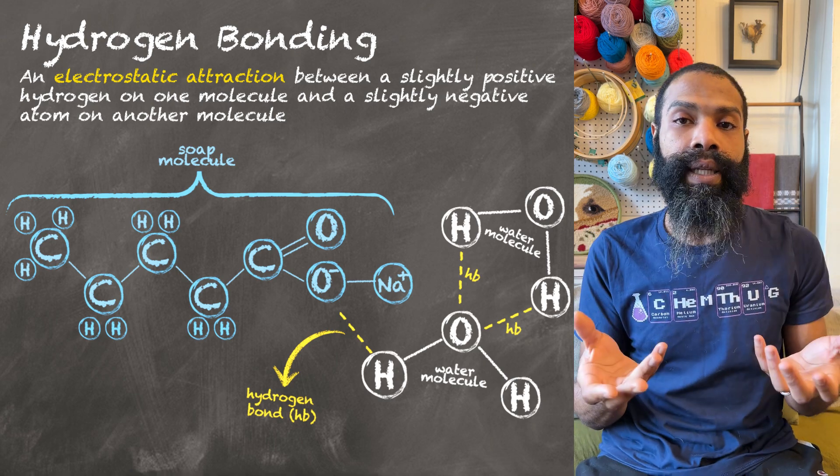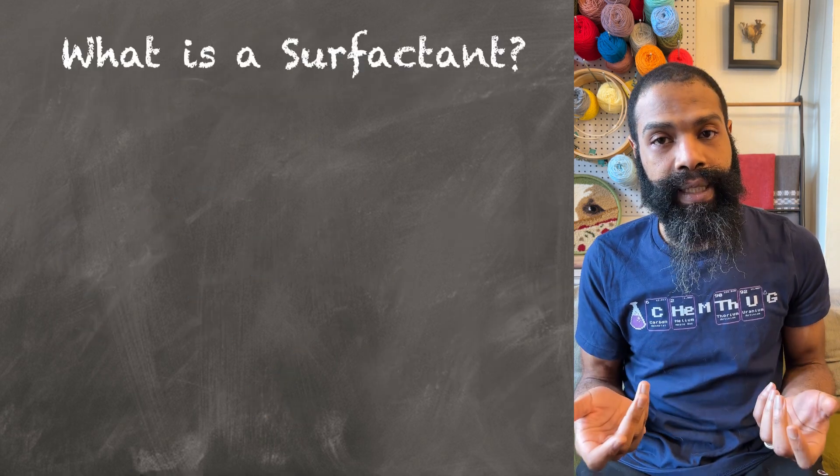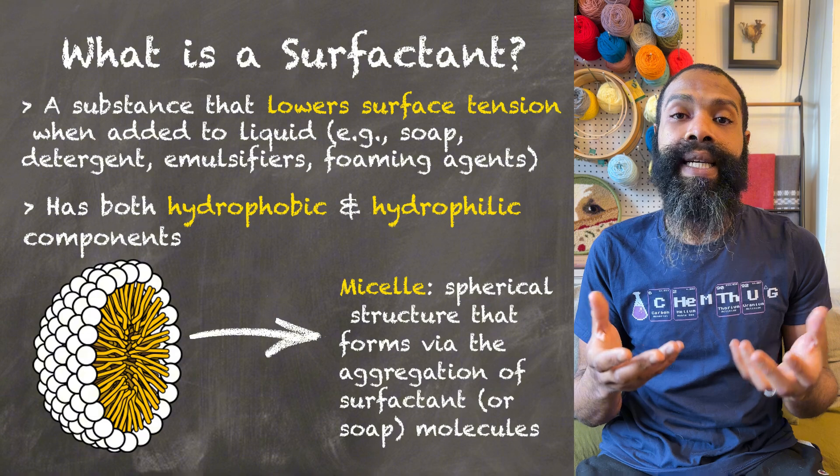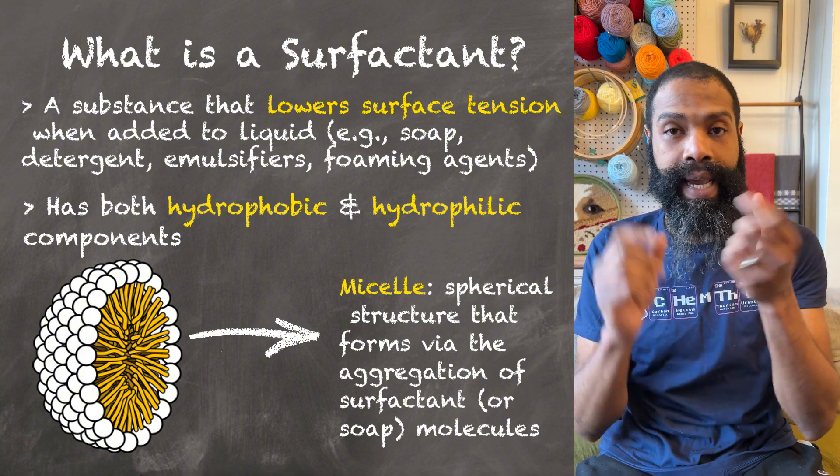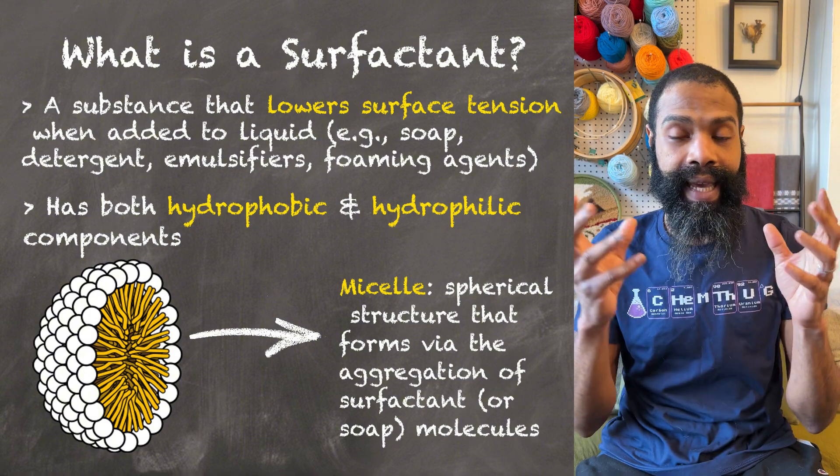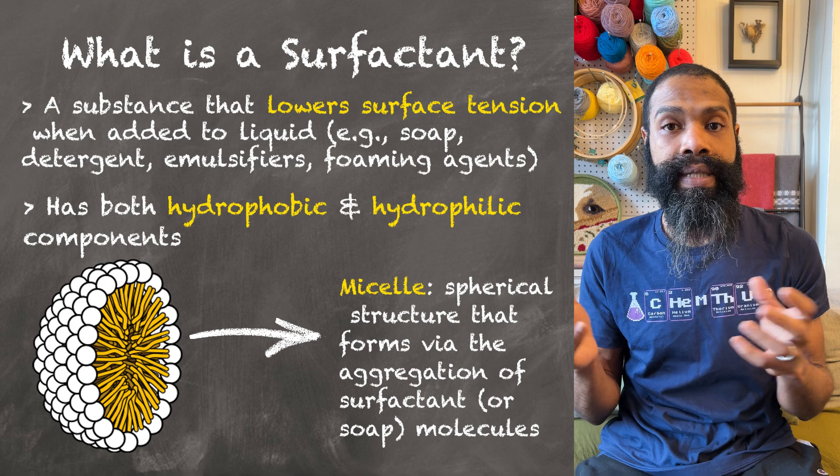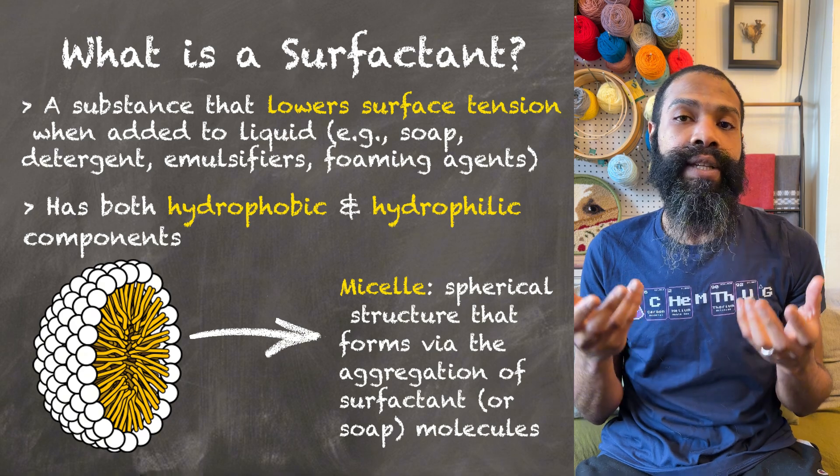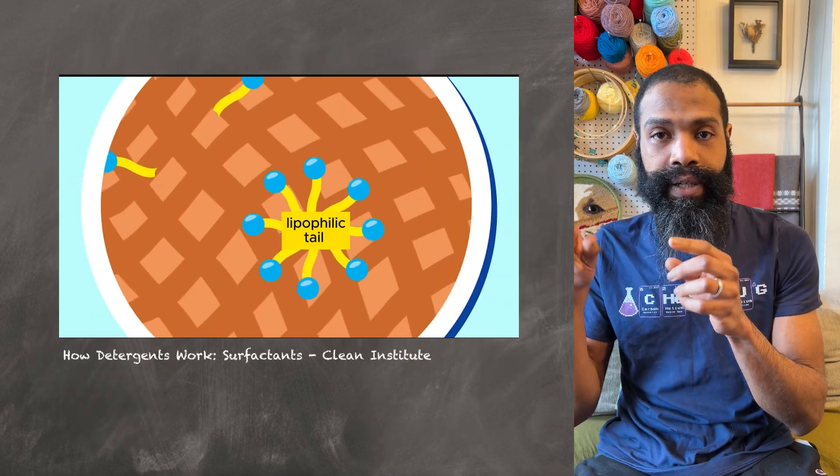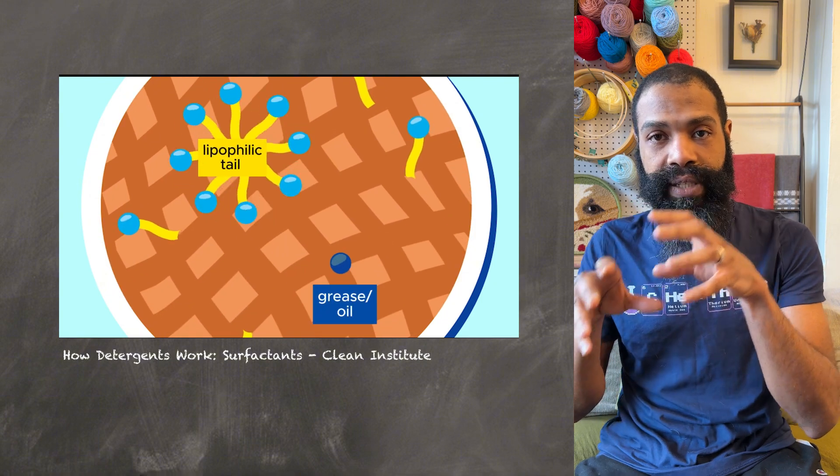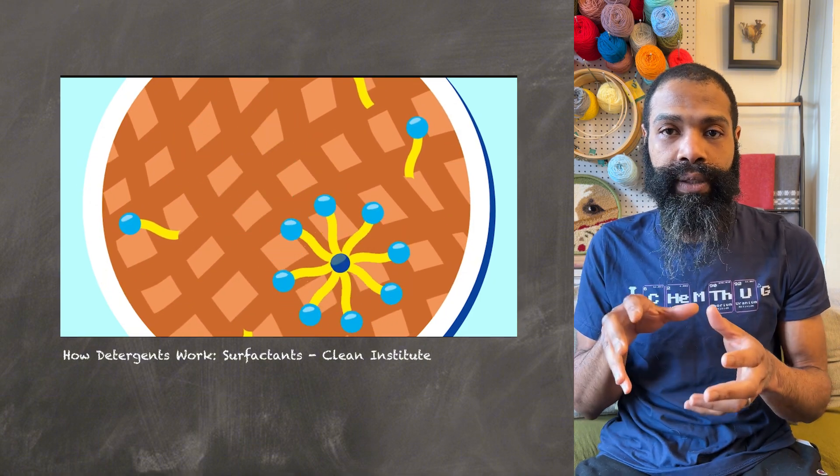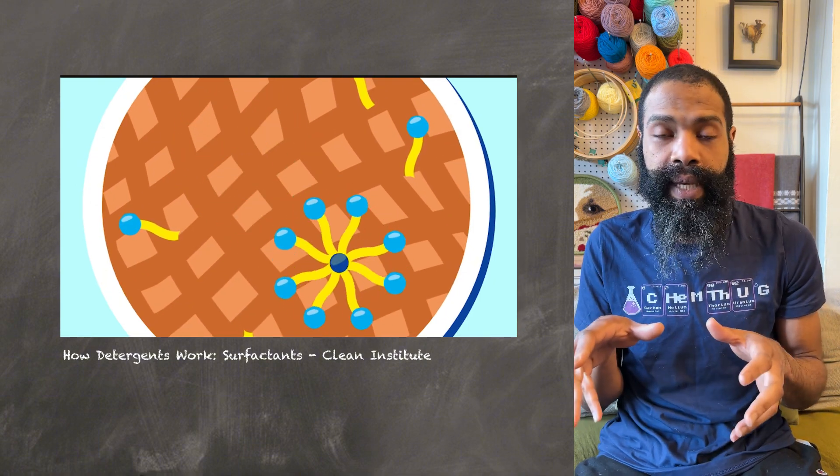So these soap molecules, also called surfactant molecules, are powerful because they have both of these parts in one molecule, which means that they can allow water and oil to mix. And the way this generally works is that long carbon and hydrogen part, it'll just kind of get stuck in grease or oil that's mixed in with something.